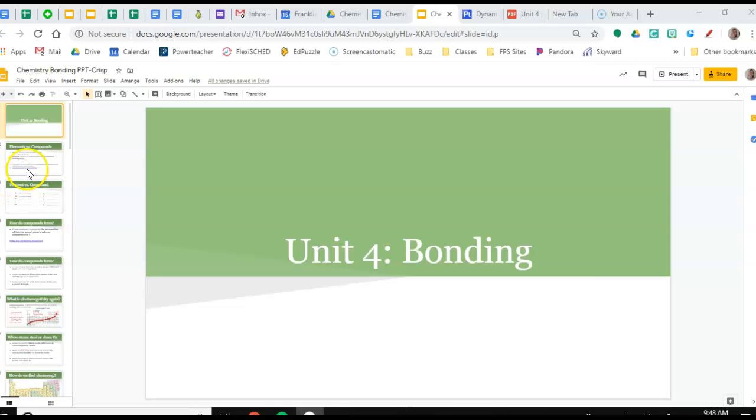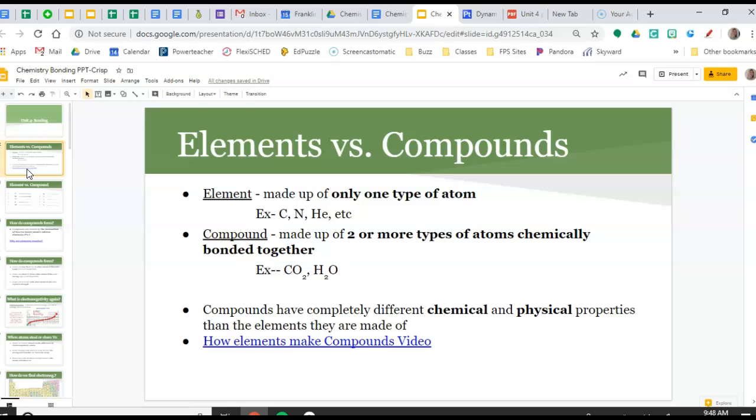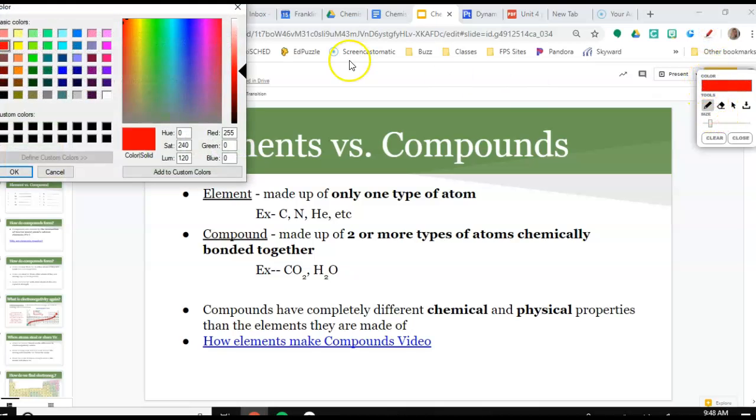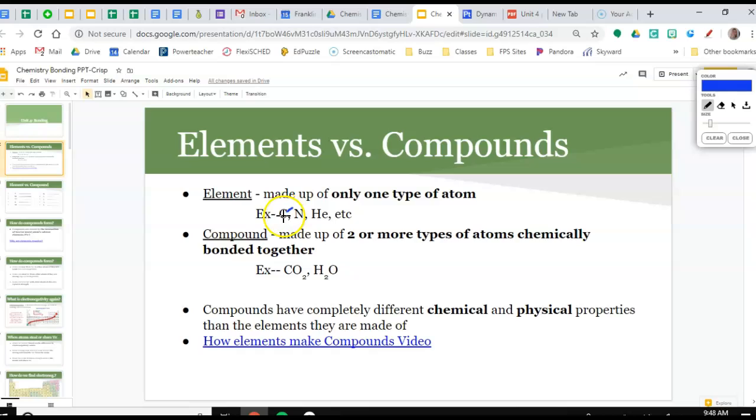The first thing I want to go over is the difference between an element and a compound. An element is made up of only one type of atom - something from any box on the periodic table. Some of those elements include carbon, nitrogen, helium, etc. Any one of the elements from the periodic table is one singular element.